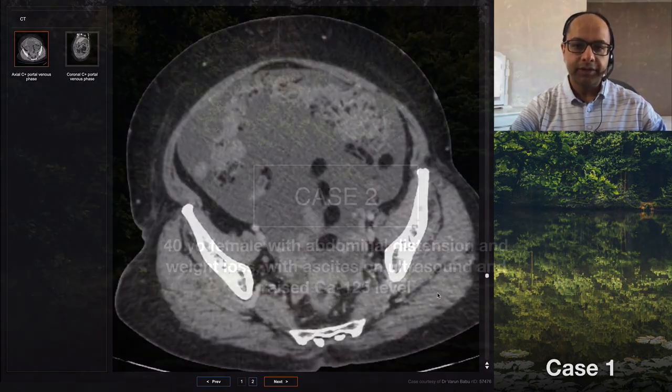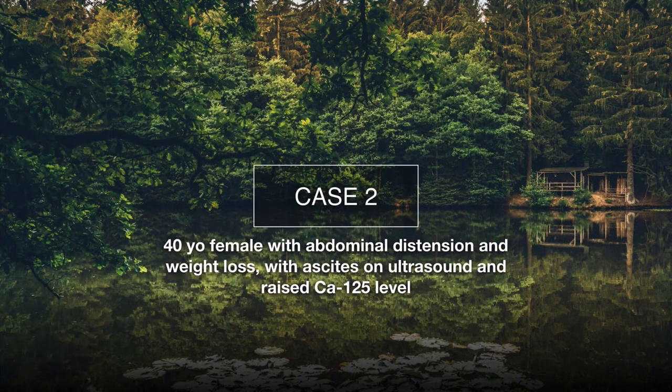Case number two is a 40-year-old woman who has abdominal distension and weight loss. Her ultrasound also showed ascites. She also has a raised CA125, which is a tumor marker, so the clinical question is whether she has disseminated ovarian cancer, as suggested from the history and lab findings.